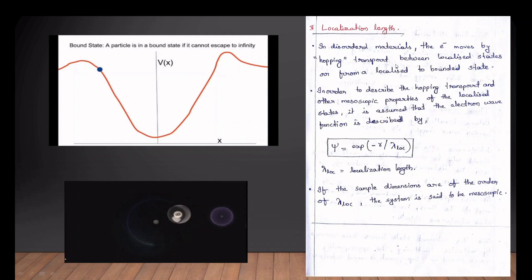This is our definition. The electrons move into hopping transport, the electron moves into a localized state, and a bounded state moves into a localized state. What is the hopping transport of electron and other mesoscopic properties of localized state?